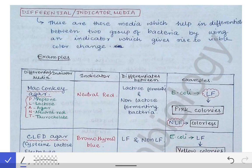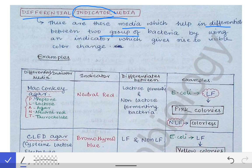Let's discuss the third part of the culture media discussion — differential or indicator media. The literal meaning of 'indicator media' is that some indicator is used in a media which helps in differentiating between two groups of bacteria, like lactose fermenting and non-lactose fermenting bacteria. These are medias which help in differentiating between two groups of bacteria by using an indicator that gives rise to a visible color change.